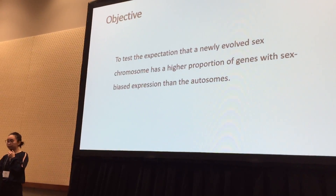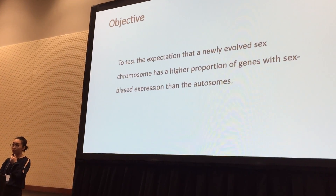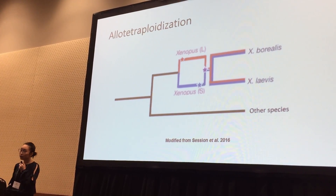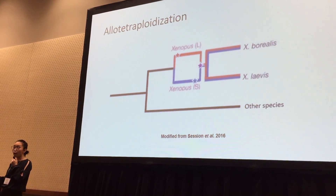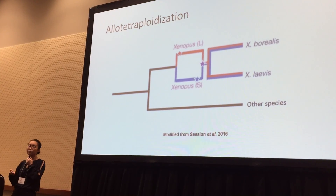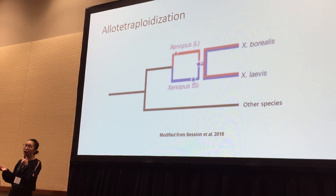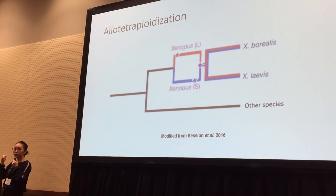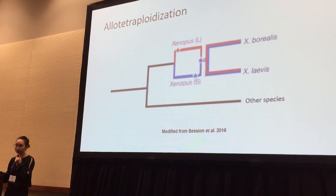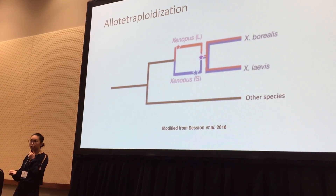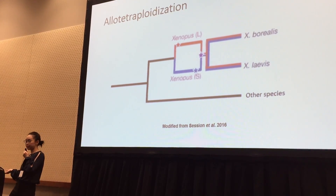A clawed frog species called Xenopus borealis gives us a great model to look at that. Xenopus borealis is an allotetraploid, which means it has an L subgenome and an S subgenome as a result of whole genome duplication events, and those two subgenomes are from two different ancestral species.